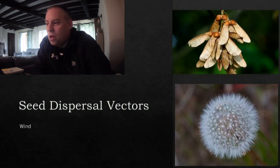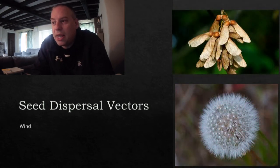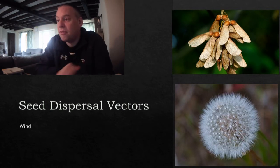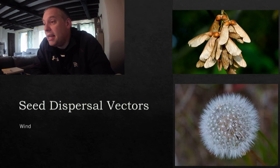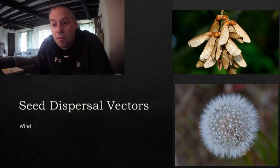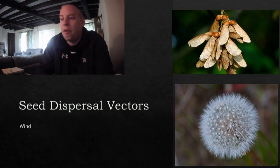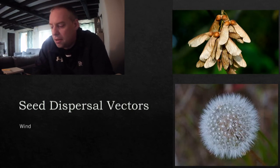Wind dispersal uses the wind to carry seeds as far away as possible. The sycamore seed is like a helicopter — it drops off, whirls round, and ends up moving a fair distance. The dandelion seed is very light with fluffy bits at the top; when the wind catches them, they dissipate on the wind and fly away.